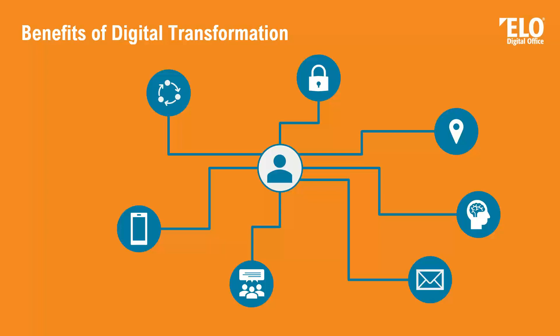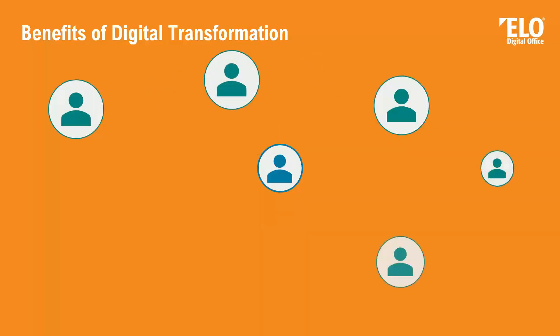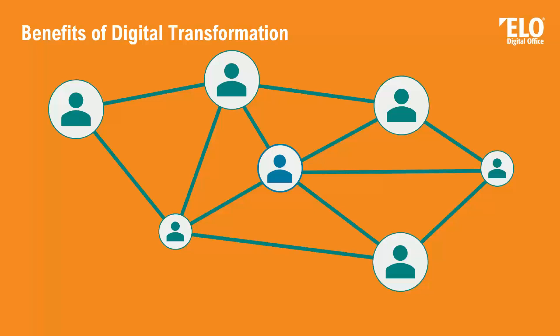We can send messages around the world in just a few seconds. Those are the benefits of digital transformation. And when we work in the office, everybody knows what the other one does. Everybody has the same state of information. Everybody knows what to do and where to find things. The person on the right knows what the person on the left does, even if they sit in different locations or in the home office. We can store our information to a central repository.